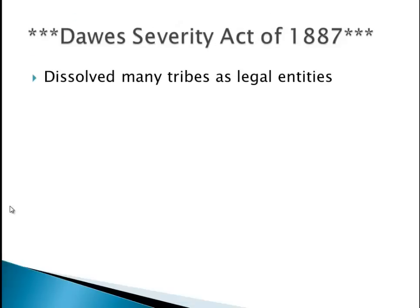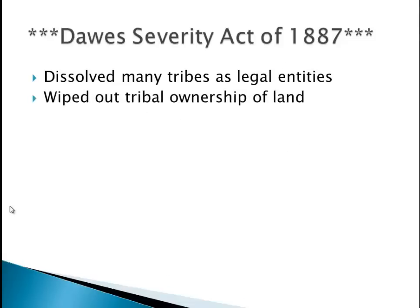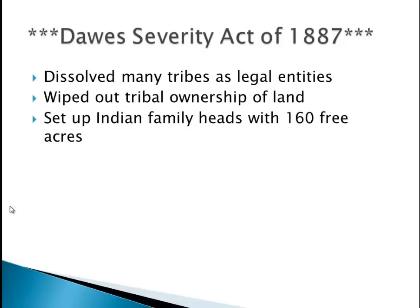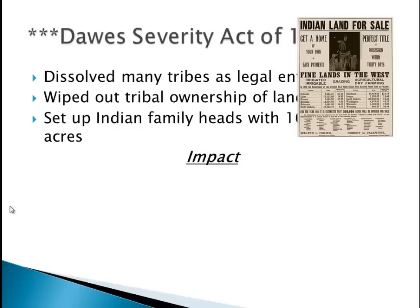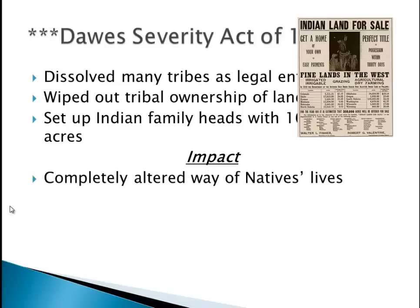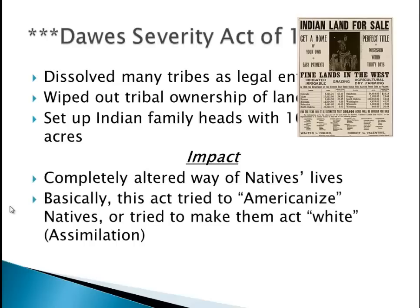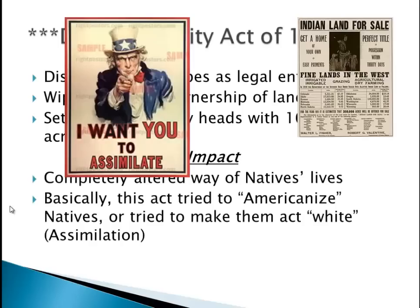In 1887, the government passes the Dawes Severity Act — very important, I've seen a lot of multiple choice stuff from this chapter. What the Dawes Act does is it changes the identity of Native Americans, changes their way of life. It dissolved many tribes as legal entities — Native Americans were no longer expected to be members of tribes. It wiped out tribal ownership of land and instead gave individual Indian family heads 160 free acres. The father would get 160 acres and his family were expected to live on it. The impact: keep in mind Native Americans are nomadic, so now they're expected to be farmers. The word to associate with the Dawes Act is assimilation — forcing them to become American, conforming to a group.